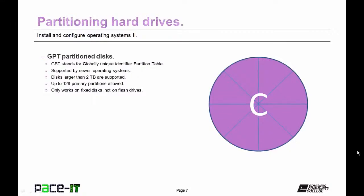Those were MBR — Master Boot Record — hard drives. A newer system called GPT, Globally Unique Identifier Partition Tables, is supported by many newer operating systems and allows for disks larger than 2 terabytes. It can hold up to 128 primary partitions, but only works on fixed disks — regular hard drives — and does not work on USB or flash drives.